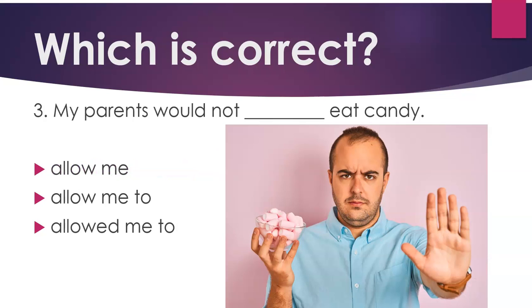Number 3. My parents would not ___ eat candy. A: Allow me. B: Allow me to. C: Allowed me to. Answer: Allow me to.